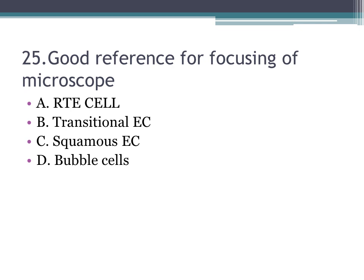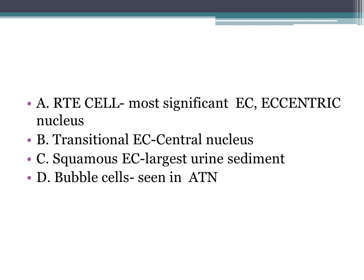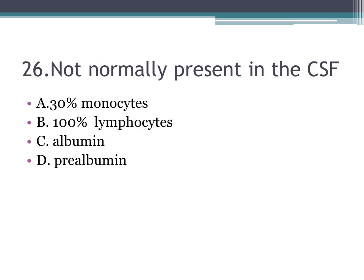Number twenty-five: good reference for focusing the microscope — A. RTE cell, B. transitional epithelial cell, C. squamous epithelial cell, D. bubble cells. The correct answer is C, squamous epithelial cell — it is the largest urinary sediment. RTE cell is the most significant epithelial cell. To differentiate RTE from transitional: RTE has an eccentric nucleus; transitional has a central nucleus. Bubble cells are seen in acute tubular necrosis.